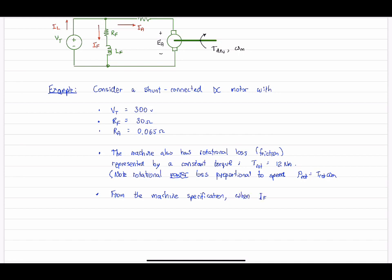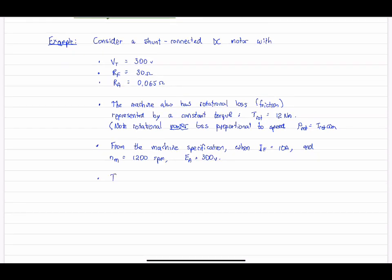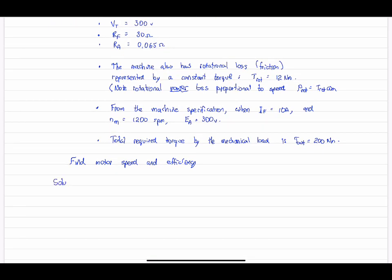Now for the machine specifications, we're given basically a point on the magnetization curve. So for a field current of 10 amps and a motor speed of 1200 RPM, the induced voltage is 300 volts. The last bit of information is what's required of the load, the mechanical load. It is demanding 200 newton meters of torque. So here's what we have to do: find the motor speed and efficiency.